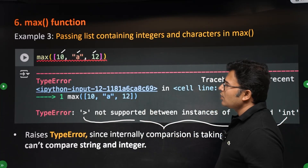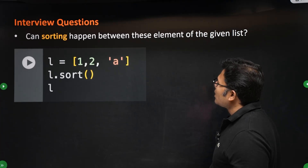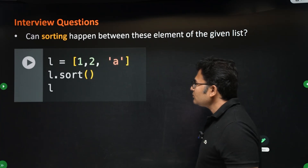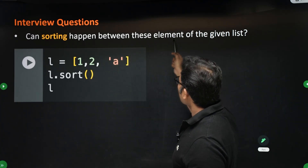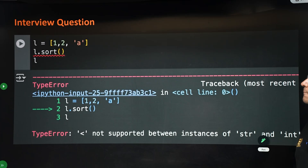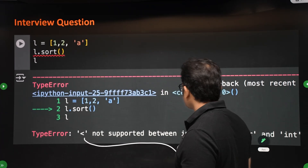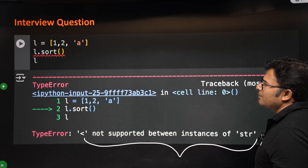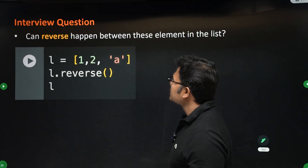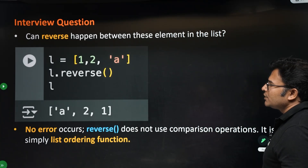Here's an interview question: can sorting happen between elements like [1, 2, 'a']? The answer is No — l.sort() will not work on a mixed list of integers and strings. However, reversed() can work on such a list — you can reverse elements of any combination of integers and strings, because reversing does not require comparison between elements.